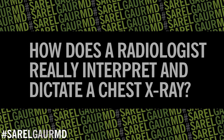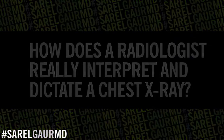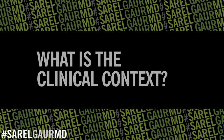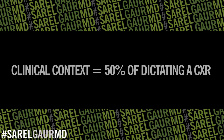So how does a radiologist really dictate a chest x-ray? The absolute first thing I think about is the clinical context. Where is this patient coming from? Is this an ER patient, a trauma patient, an ICU patient, a surgery ICU patient who just had cardiac surgery, or a normal outpatient whose primary care doctor wants to rule out something suspicious? Knowing this history is so critical — it's probably 50% of the interpretation, just knowing where the patient is coming from and what important things to look for.